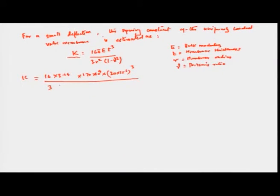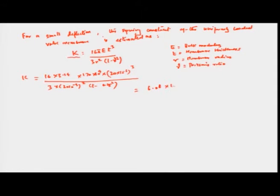We have R² = (2×10⁻³)² and (1 − 0.25²) as the Poisson's ratio term. This gives k = 6.08×10³ N/m. That is the equivalent spring constant for the silicon membrane acting as the valve seat.